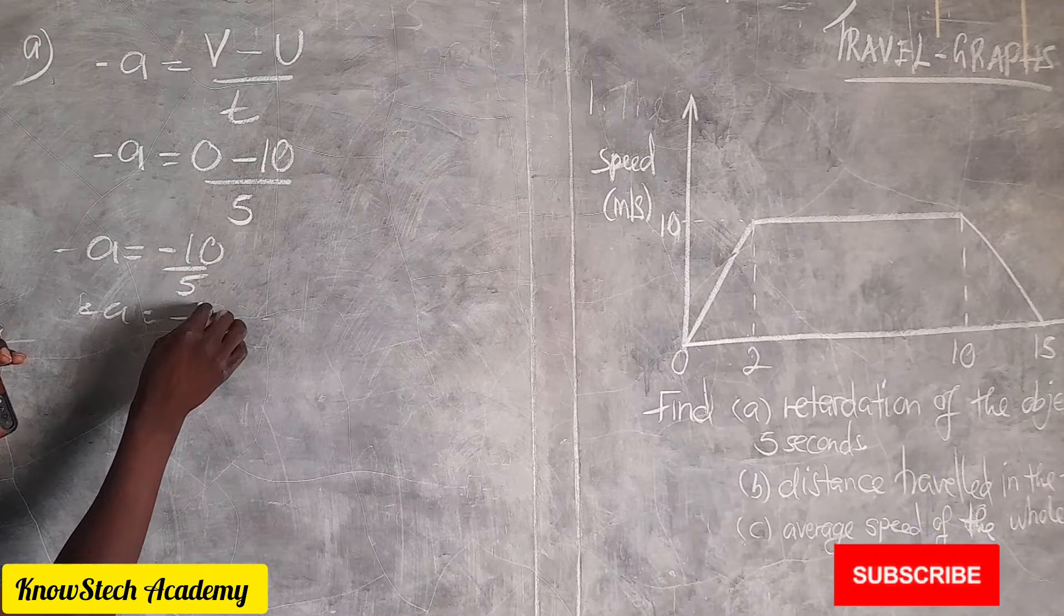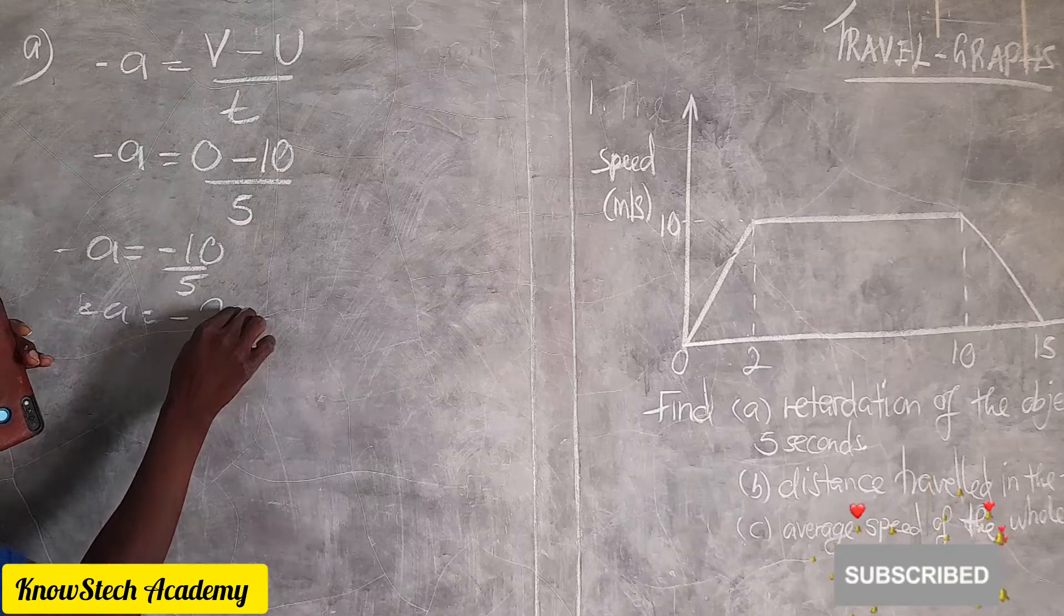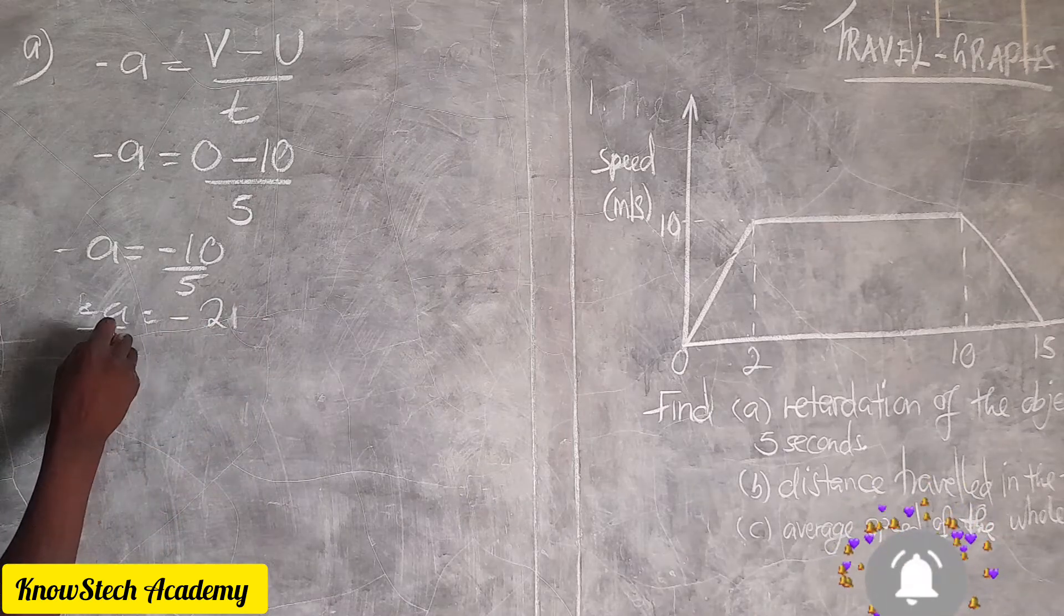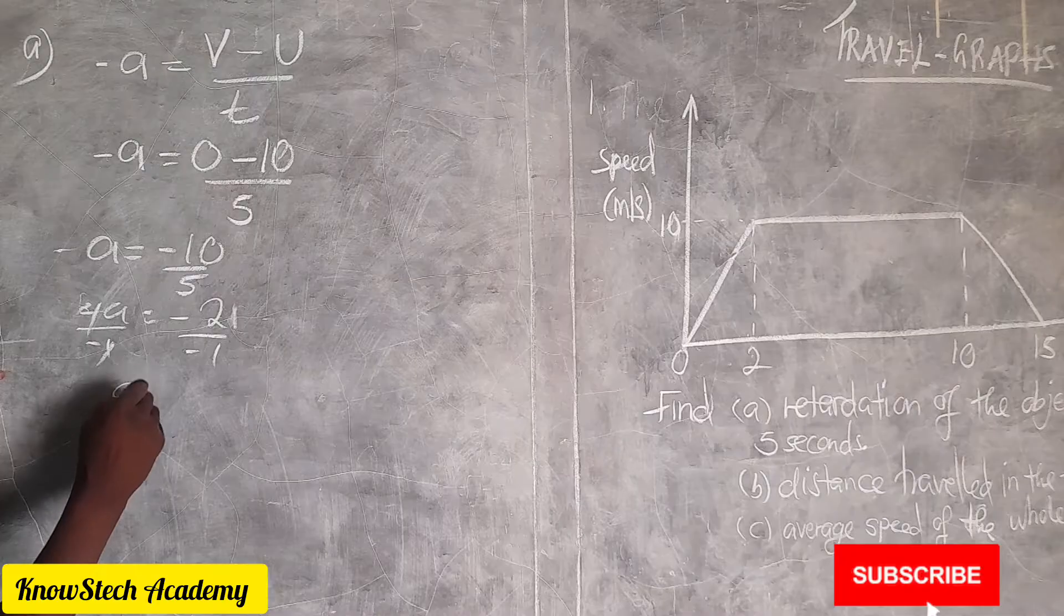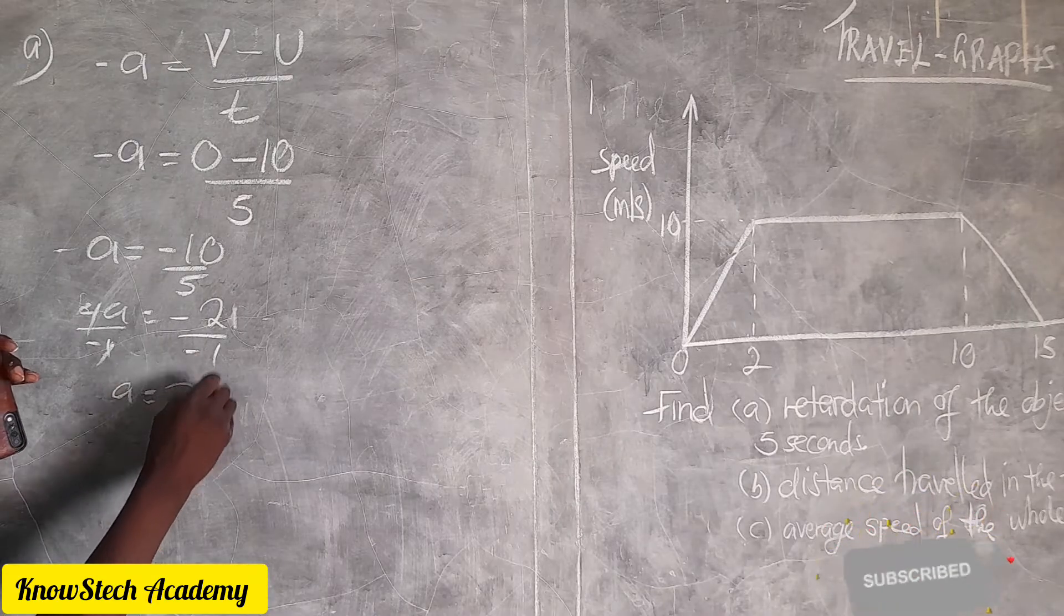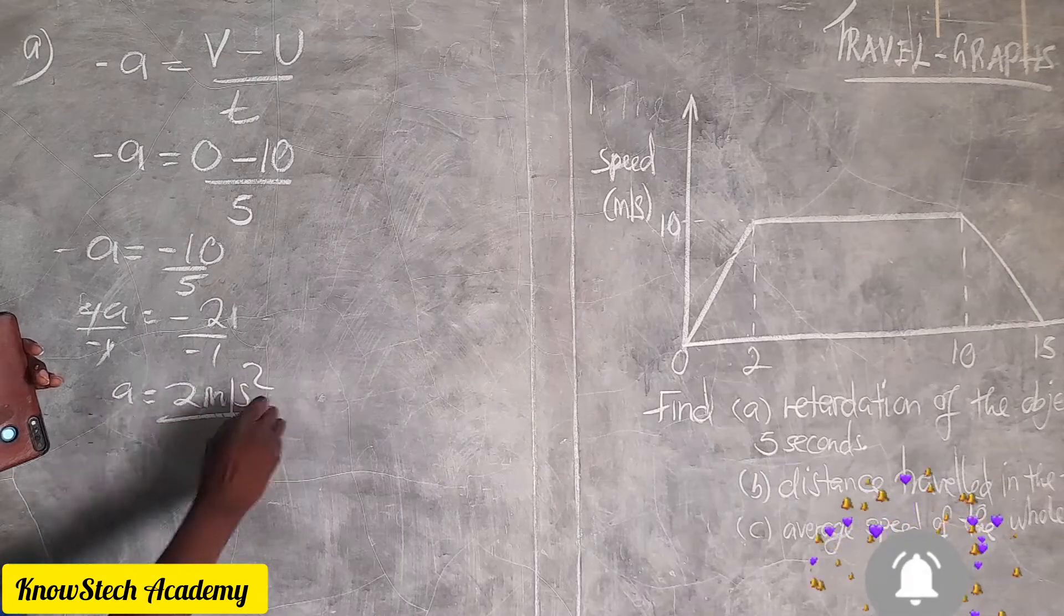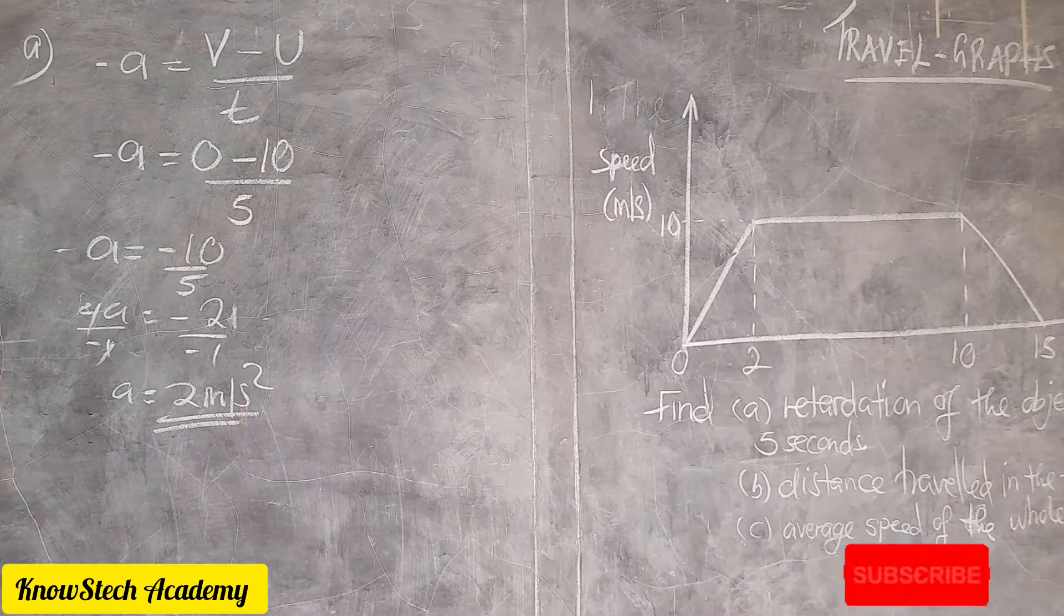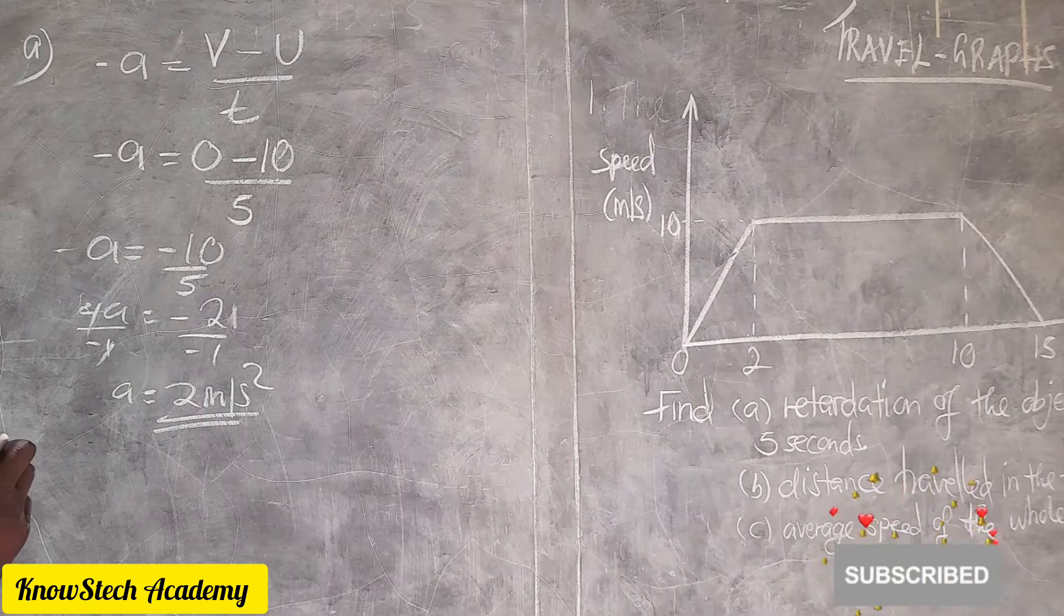This is equal to negative two. Then we divide by this negative which is here. Negative negative, therefore acceleration will be just two meters per second squared. So this is our deceleration, two meters per second squared or negative acceleration.